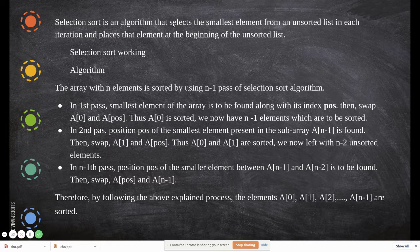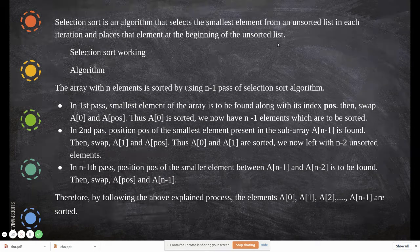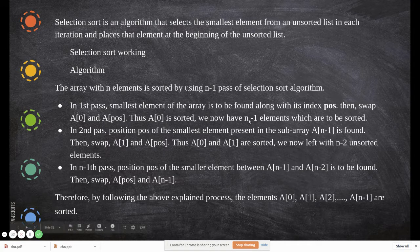Selection sort is an algorithm that selects the smallest element from an unsorted list. In each iteration, if there are n number of elements, it will iterate from one to n, and in each iteration the smallest element will be selected and placed in its correct position at the beginning of the unsorted list.